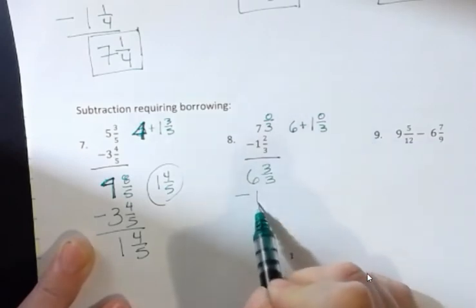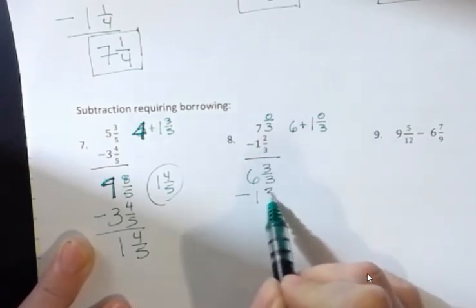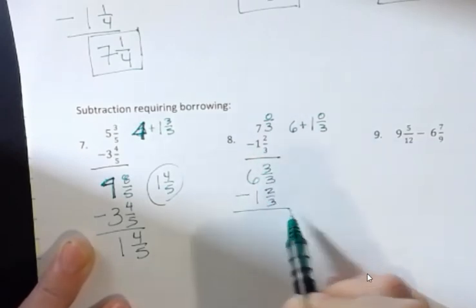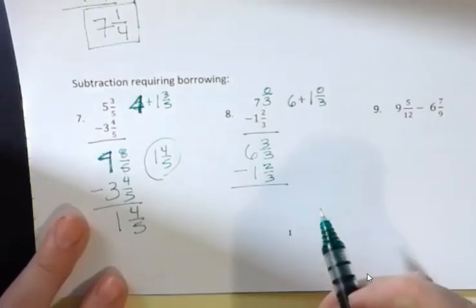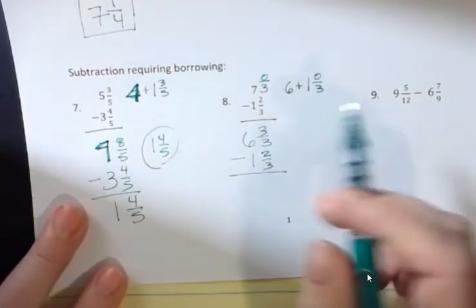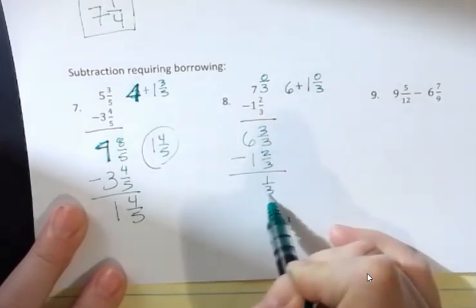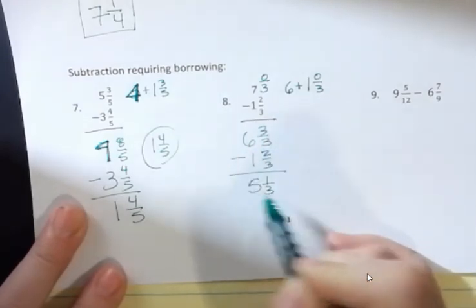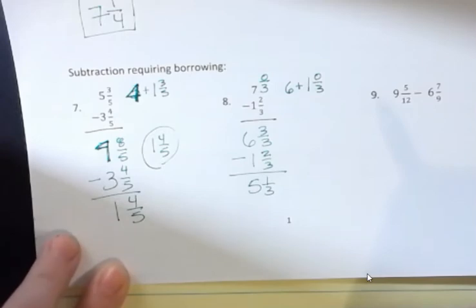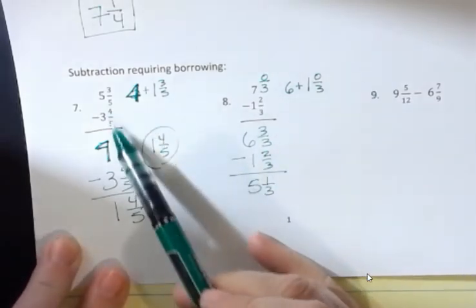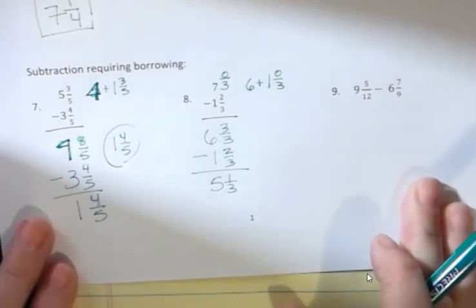Now I'm ready to subtract. I have 3 thirds and I subtract 2 thirds. Keep the denominator the same and subtract, so I have 1 third. Then 6 minus 1 is 5. So in that one, I didn't have to change the denominator and I didn't have a fraction on top. Now we have the third example, which is going to be our hardest one because we have everything to deal with.